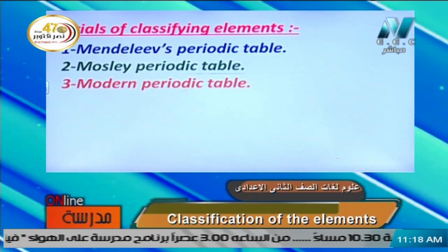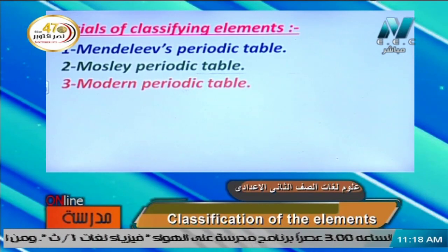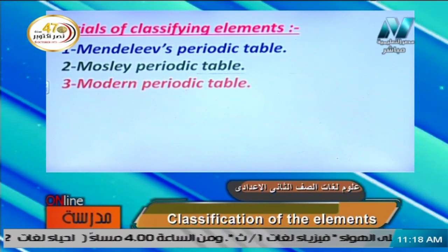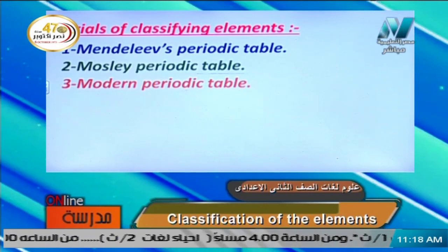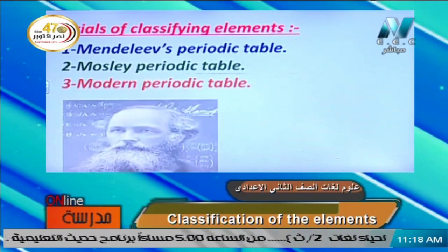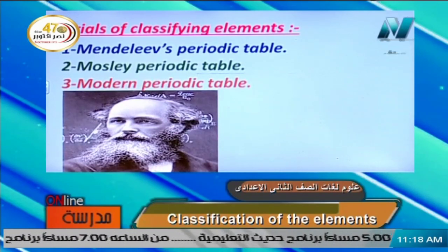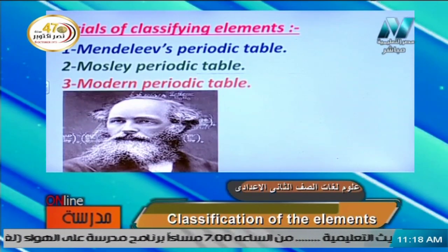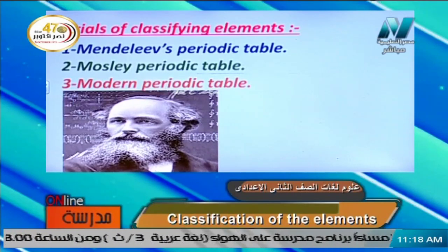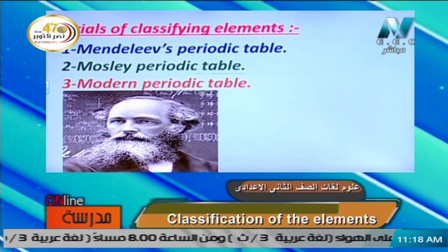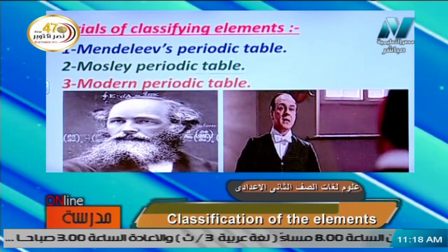There are three main attempts to classify the elements. Number one: Mendeleev's periodic table. Number two: Mosley's periodic table. Number three: the modern periodic table. The first scientist who made a modern classification of the elements was Dmitry Mendeleev, a Russian scientist. The second is Mosley, and the third is the modern periodic table. We will start with Mendeleev's periodic table.